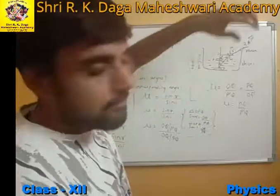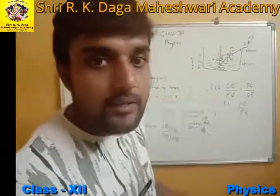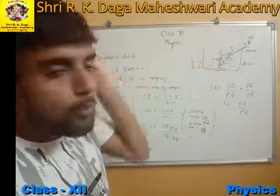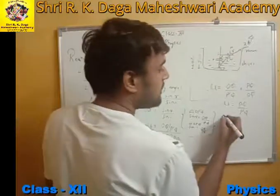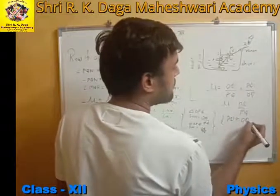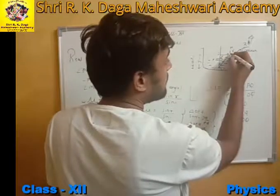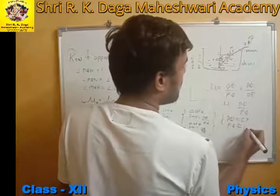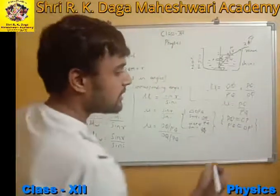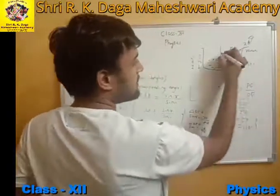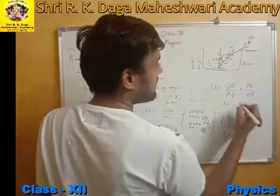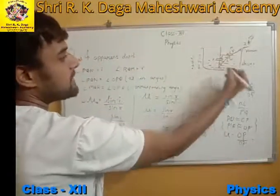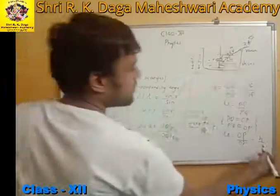Since the speed of light is very high, the time taken to go from P to Q is nearly equal to the time to go from O to Q. So PQ is nearly equal to OP, and P'Q is nearly equal to OP'. Therefore, the equation becomes nu equals OP upon OP'.